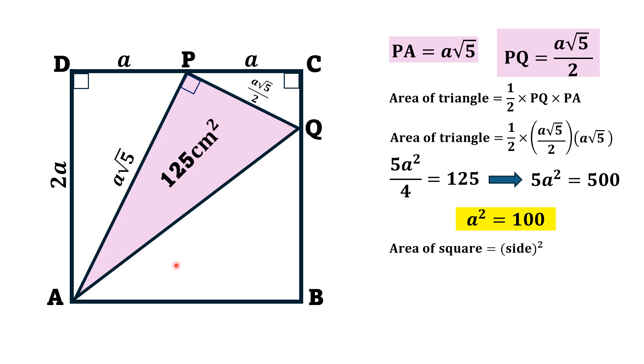Area of the square is equal to the square of its side, and we know that side length of this square is 2a, so we have area of the square is equal to 2a whole square, which is equal to 4a square, and substituting the value of a square, which is 100, we will get area of square is equal to 400 centimeter square. That is the answer.